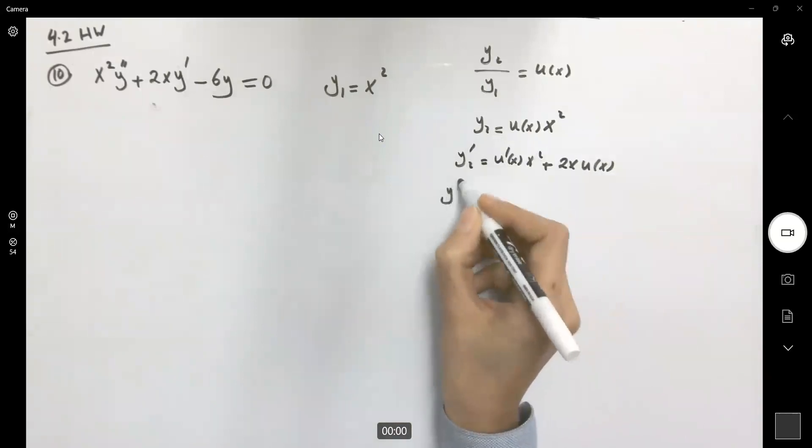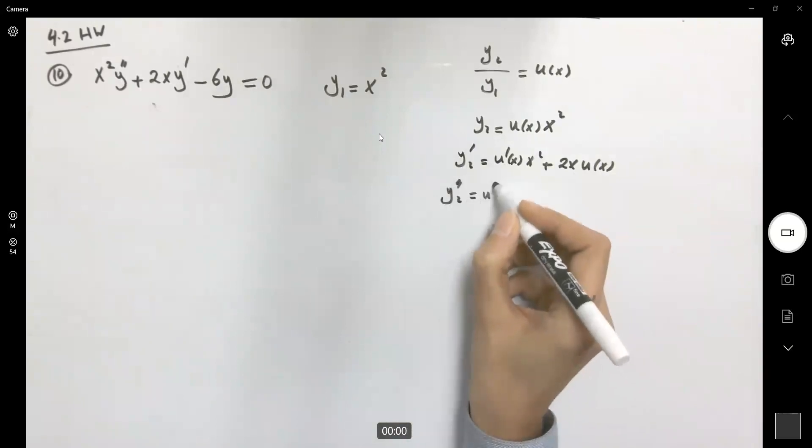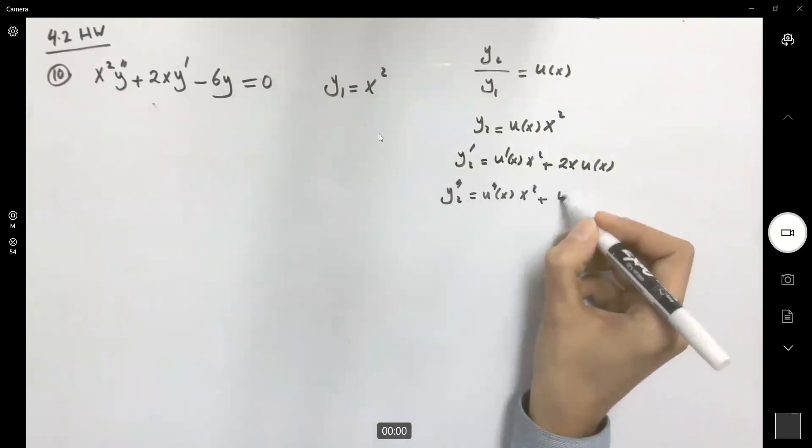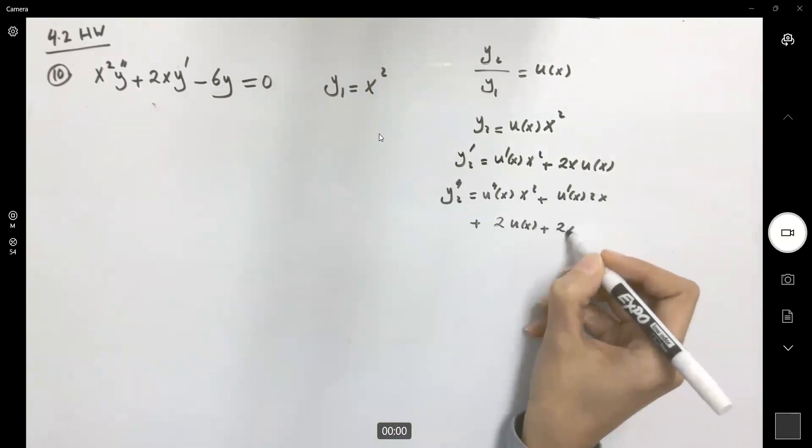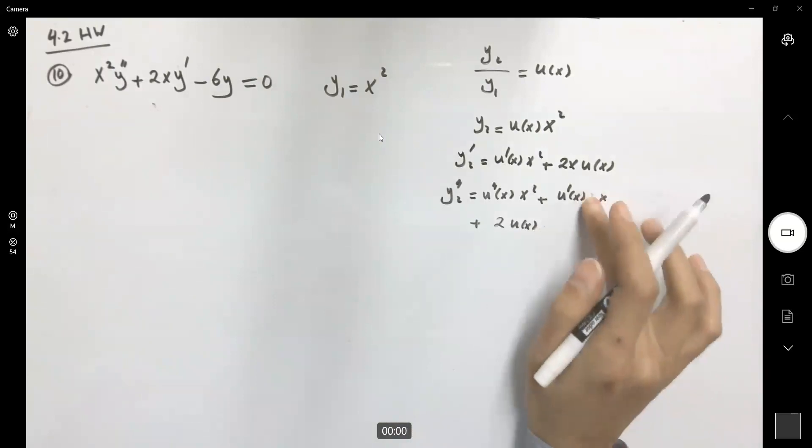And then the second derivative becomes u double prime times x squared plus u prime x times 2x plus 2 u of x plus 2x u prime of x. As you can see, you have like terms. So this is going to be the third term. So this is going to be 4x.